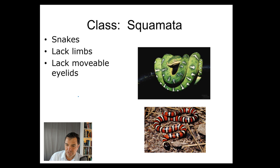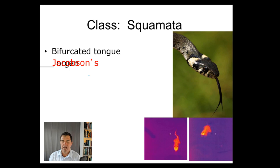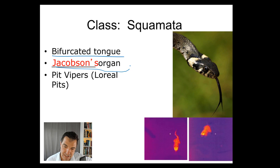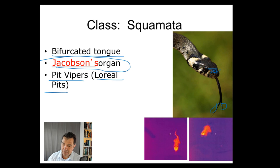Snakes lack limbs and lack movable eyelids — though again, some lizards fall in that category too. Snakes have a bifurcated tongue. They also have a Jacobson's organ near the front of their mouth. When they take their tongue back in, they can sense chemicals that have landed on the bifurcated tongue and determine where an animal is — right or left — based on the smell. Many of them also have loreal pits, such as our pit vipers, and they can sense heat.